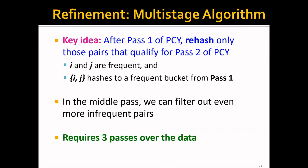The key idea is that after pass one of the PCY algorithm, we can rehash only those pairs that satisfy two conditions. The first condition is that i and j are frequent — the same condition as in PCY. The second condition is that the pair ij hashes to a frequent bucket from pass one. This gives us a second pass table, and in this middle pass we can filter out even more infrequent pairs. The drawback is that it requires three passes over the data.